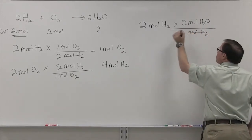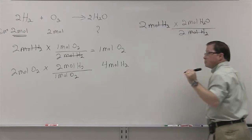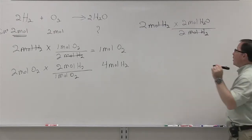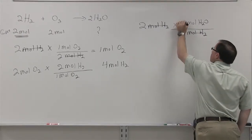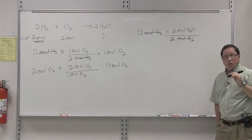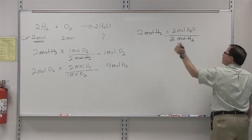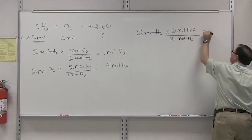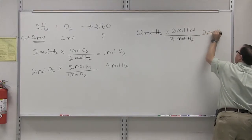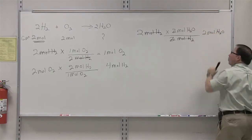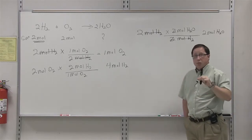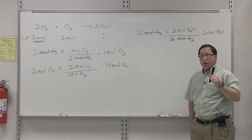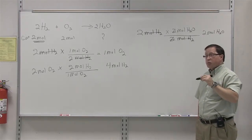We're going to cancel here. And remember, we can also cancel these twos. That leaves us with two moles of water. And so, what we're saying is that if we have two moles of hydrogen, we can only produce two moles of water.